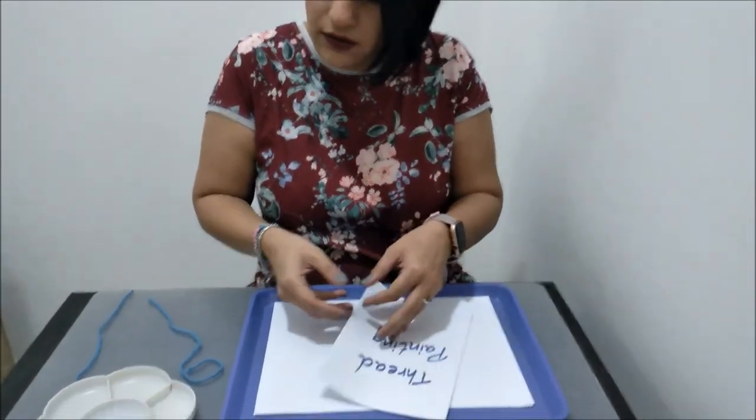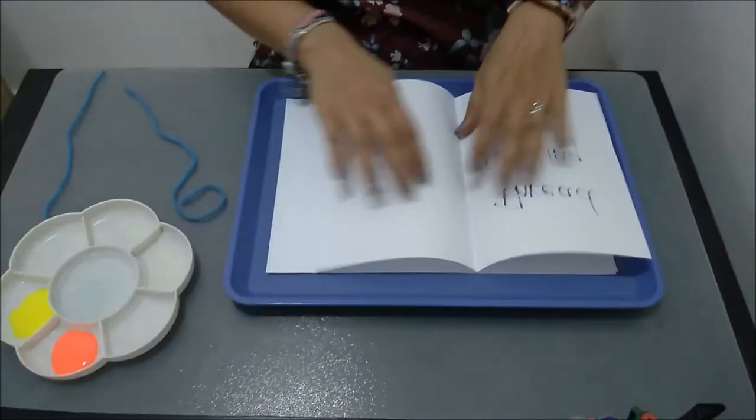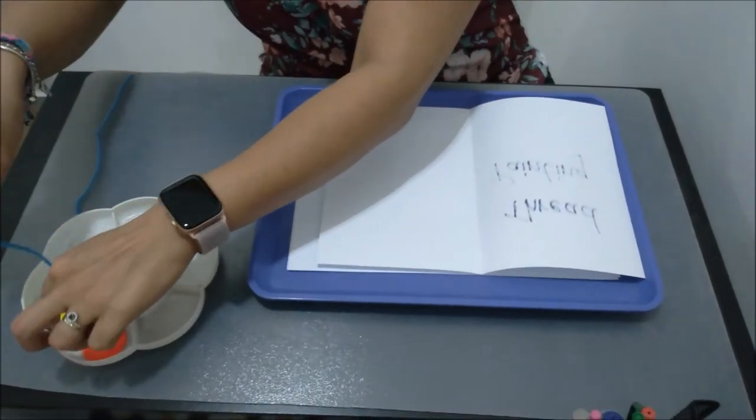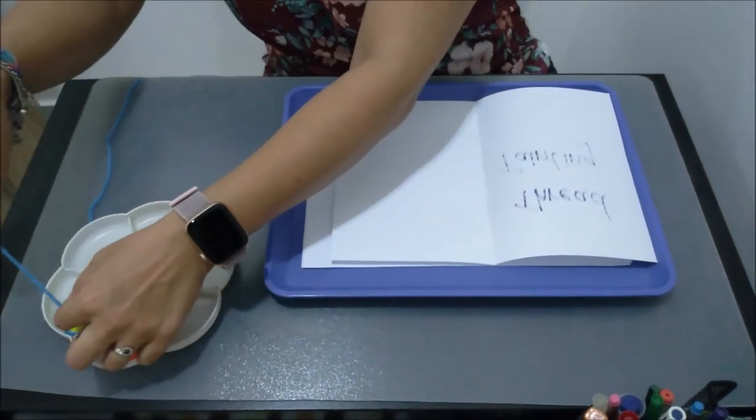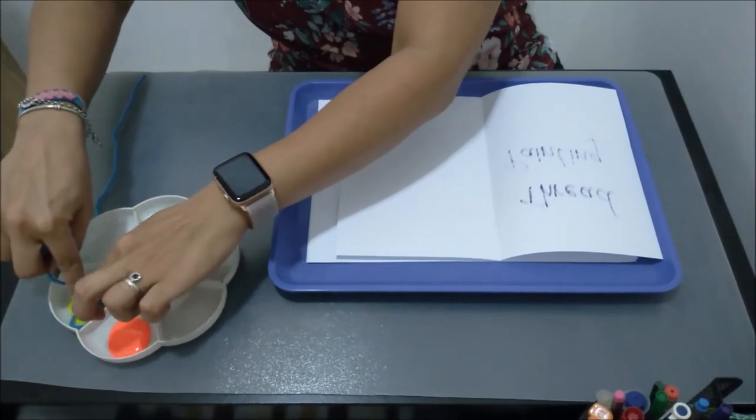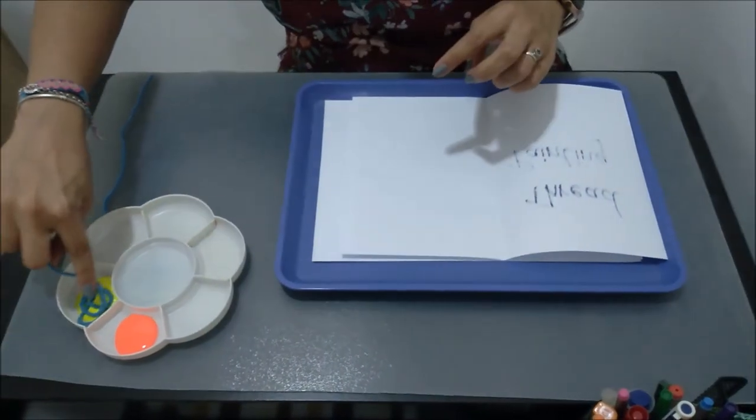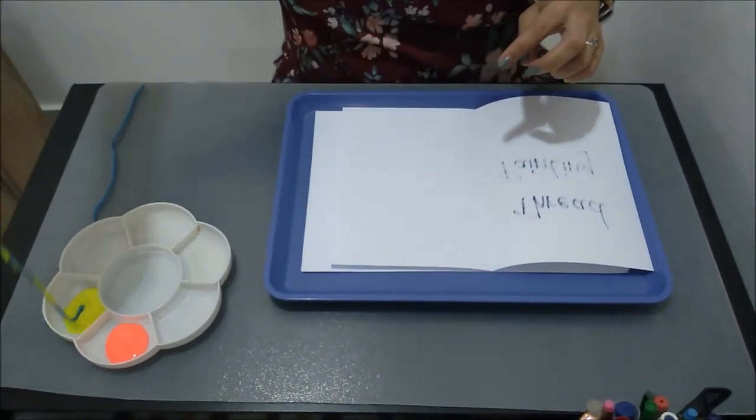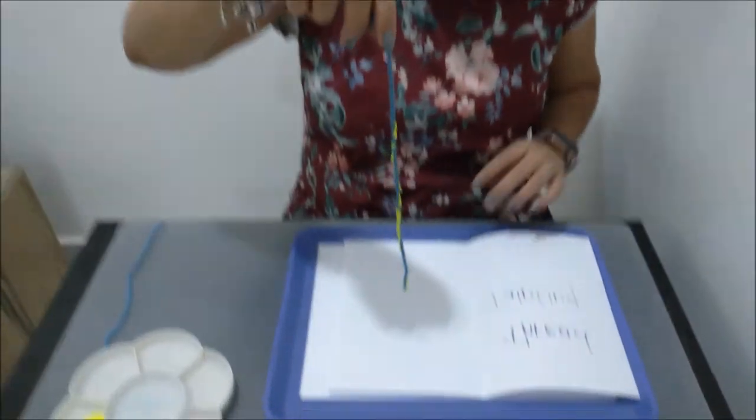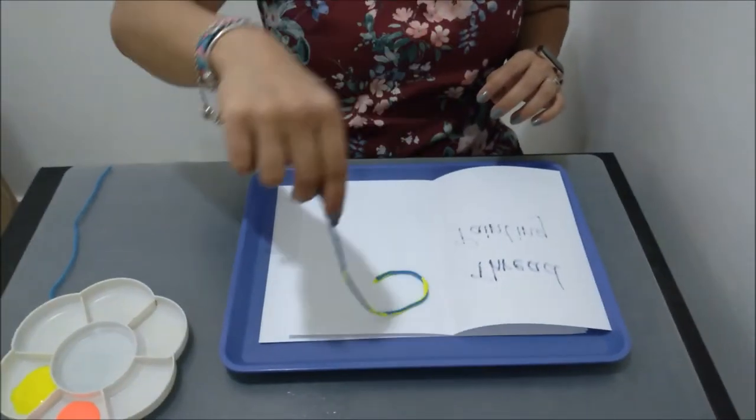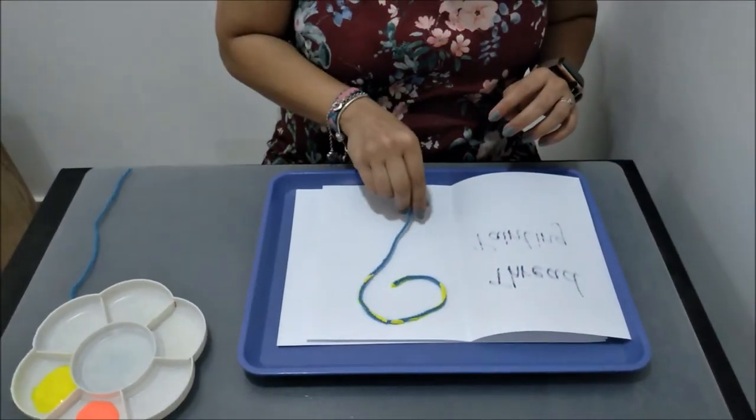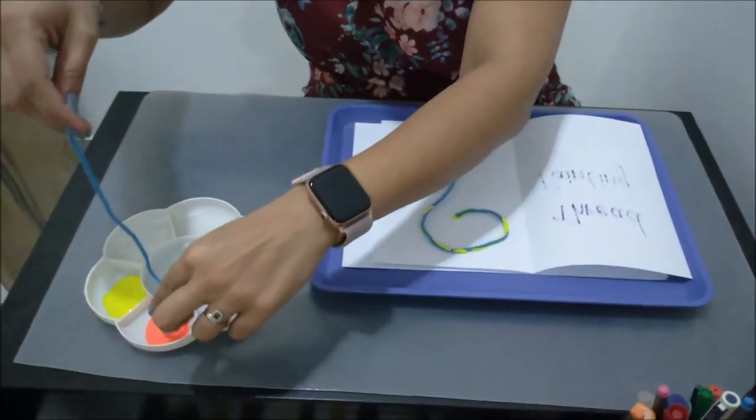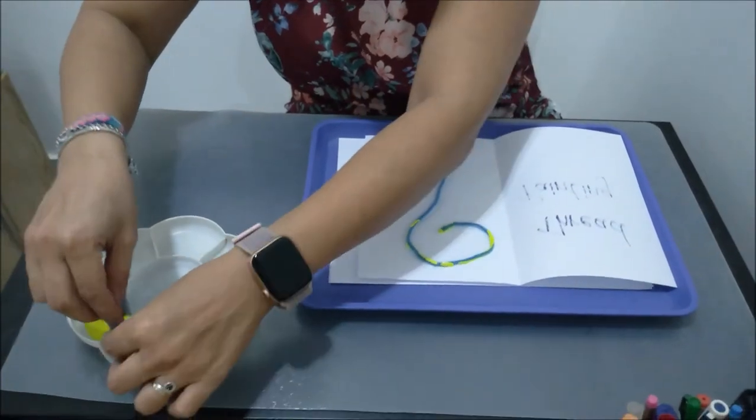Apply the paint to the thread, then spread it across the paper in a design that you like. You can do it one by one, or you can do multiple at the same time.